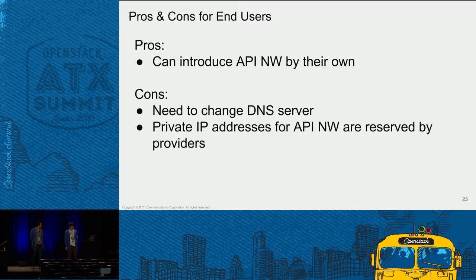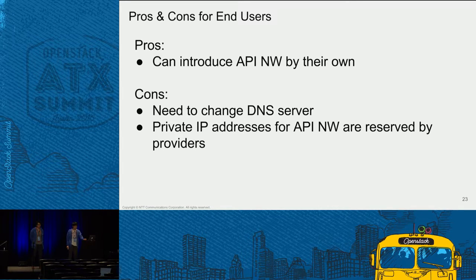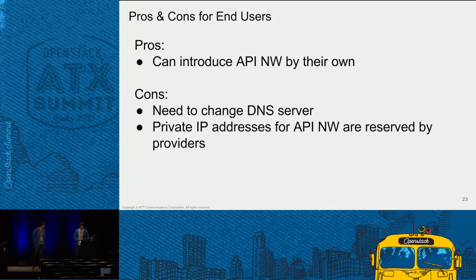Let's move on to pros and cons for users. End users can introduce API network by using Neutron API. Meanwhile, end users need to change the DNS server for the private subnet. In addition, private IP addresses for the API network are reserved by providers. Next, I will turn it over to Yuki.